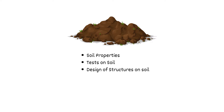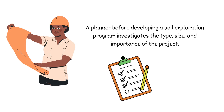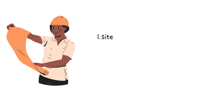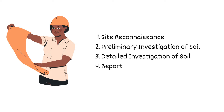Let's explain in detail the stages performed in a soil exploration program. A planner, before developing a soil exploration program, investigates the type, size, and importance of the project. Small projects demand only a preliminary investigation, while complex ones require both preliminary and detailed investigation. The stages in site exploration are: site reconnaissance, preliminary investigation of the soil, detailed investigation of the soil, and finally report making.